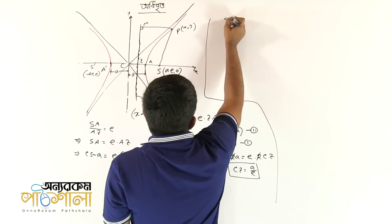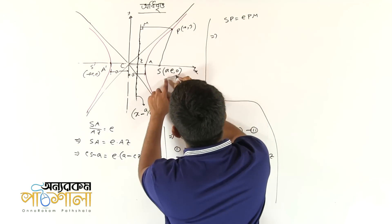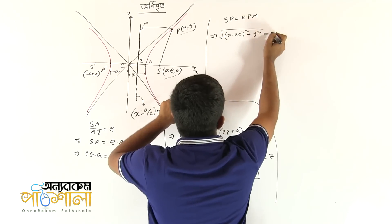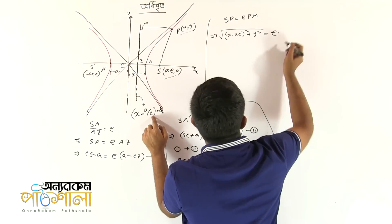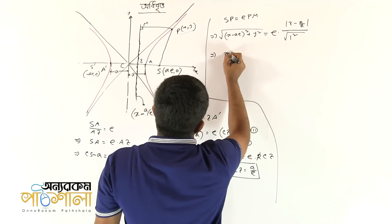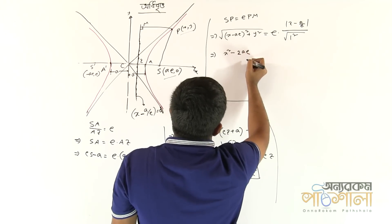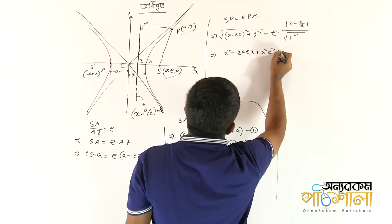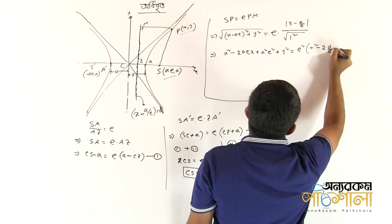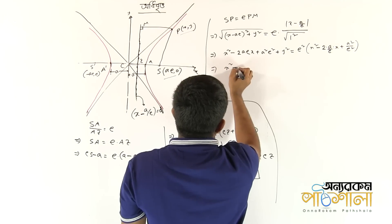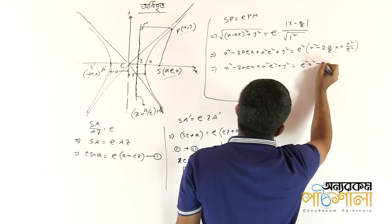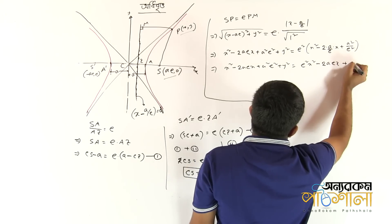Let's get a second. Sp equals to epm. I am going to do sp. A is 1. Root over a squared plus a squared equals to e. A squared minus a equals to 0. So x minus a·e divided by root over x squared. Let's give x squared minus 2Ae·x plus a²e² plus y² equal to e² times x squared minus 2Ae·x plus e² plus a²e². x squared minus 2a·e·x plus a squared.